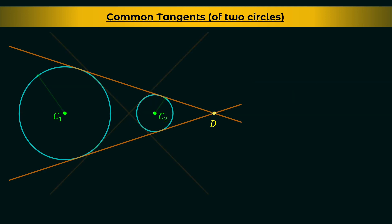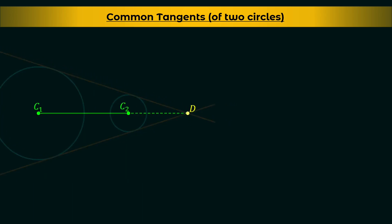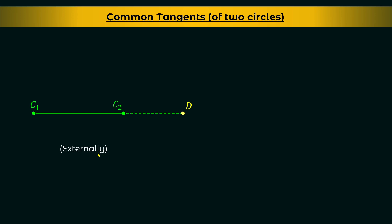Now let's observe the direct common tangents. Take the center C1, C2, and the point of intersection of direct common tangents D on the same straight line. You can observe that the point D divides the line segment C1C2 externally — externally because it is outside the line segment — in the ratio A1 : A2, where A1 is the radius of the first circle and A2 is the radius of the second circle. So D divides the line segment joining the centers in the ratio of their radii, meaning C1D / C2D = A1 / A2.